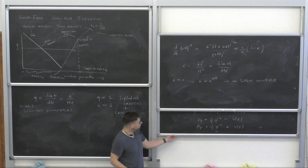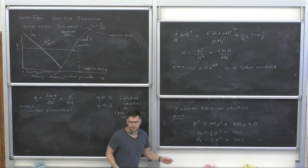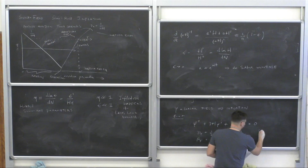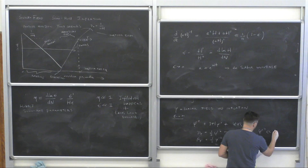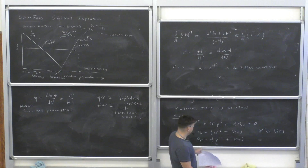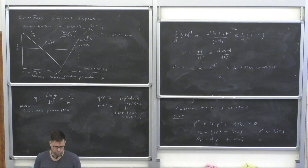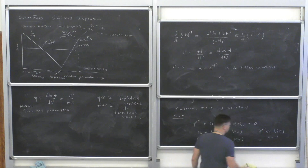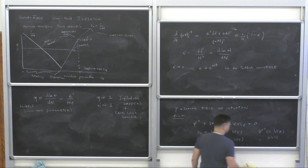For slow-roll inflation: if the kinetic term (1/2)φ′² is much smaller than V, then taking the ratio P/ρ gives approximately −1, which is the equation of state we need. So if φ′² ≪ V, then w ≈ −1, giving us the necessary conditions for inflation.